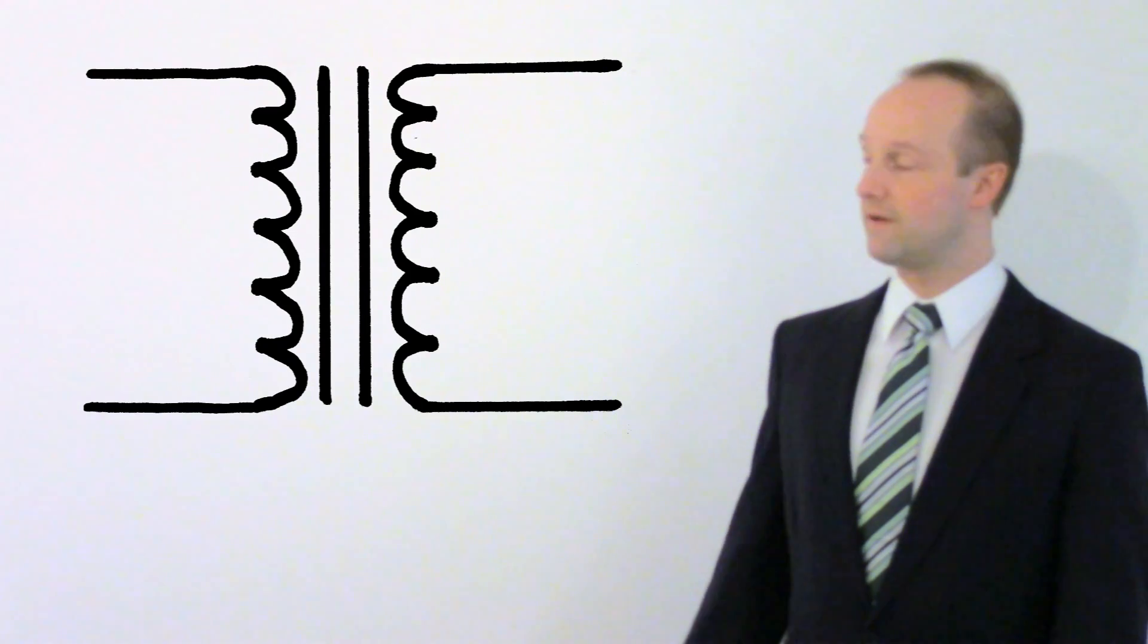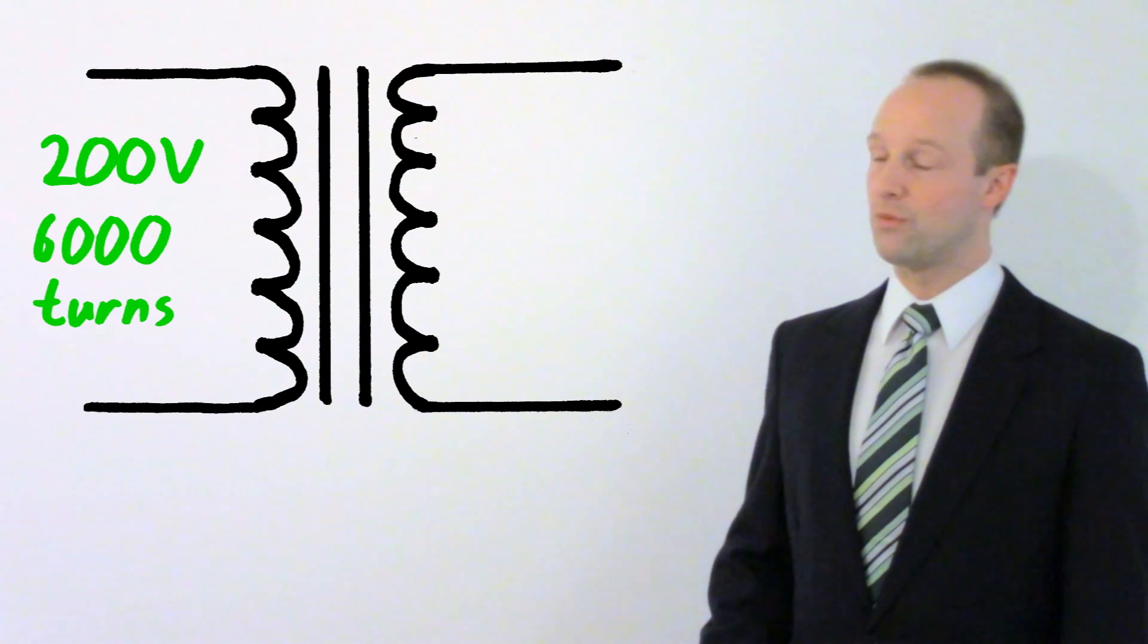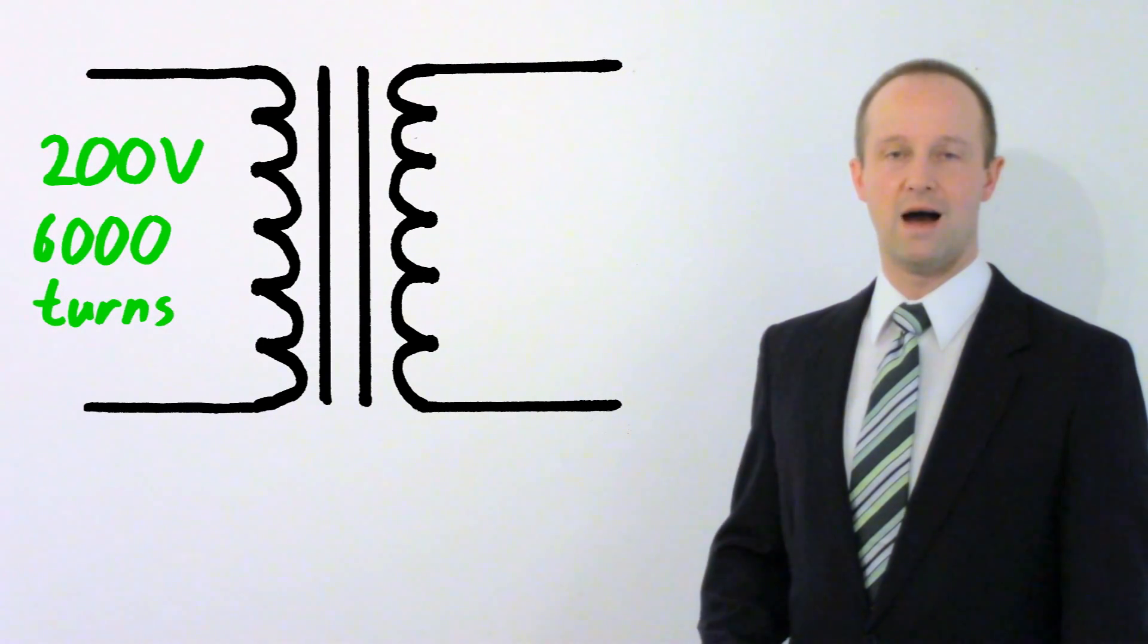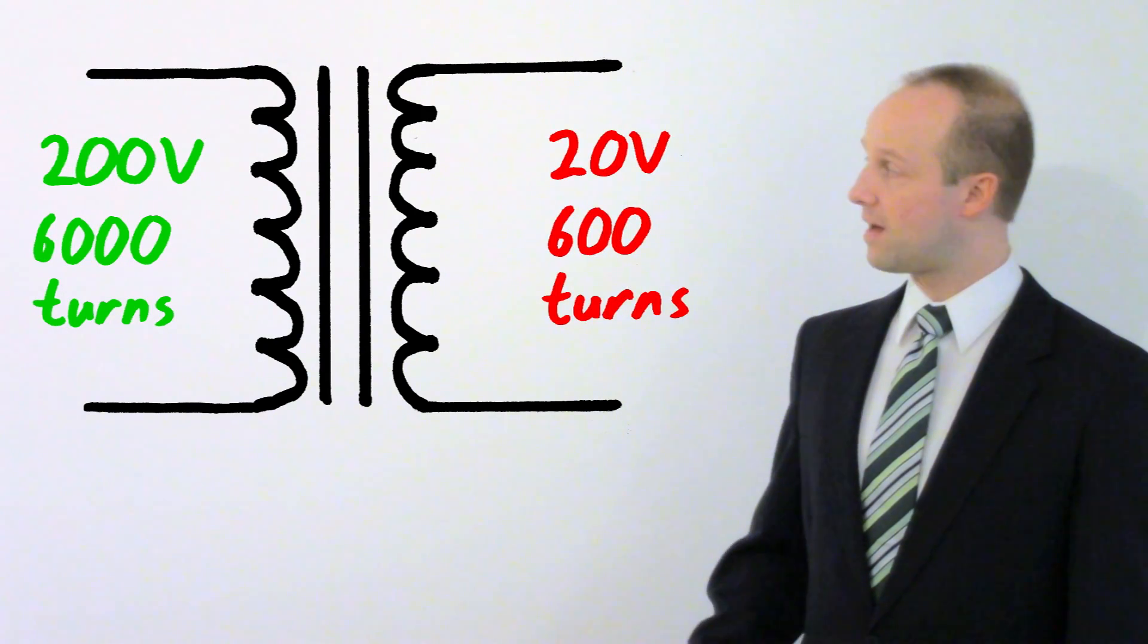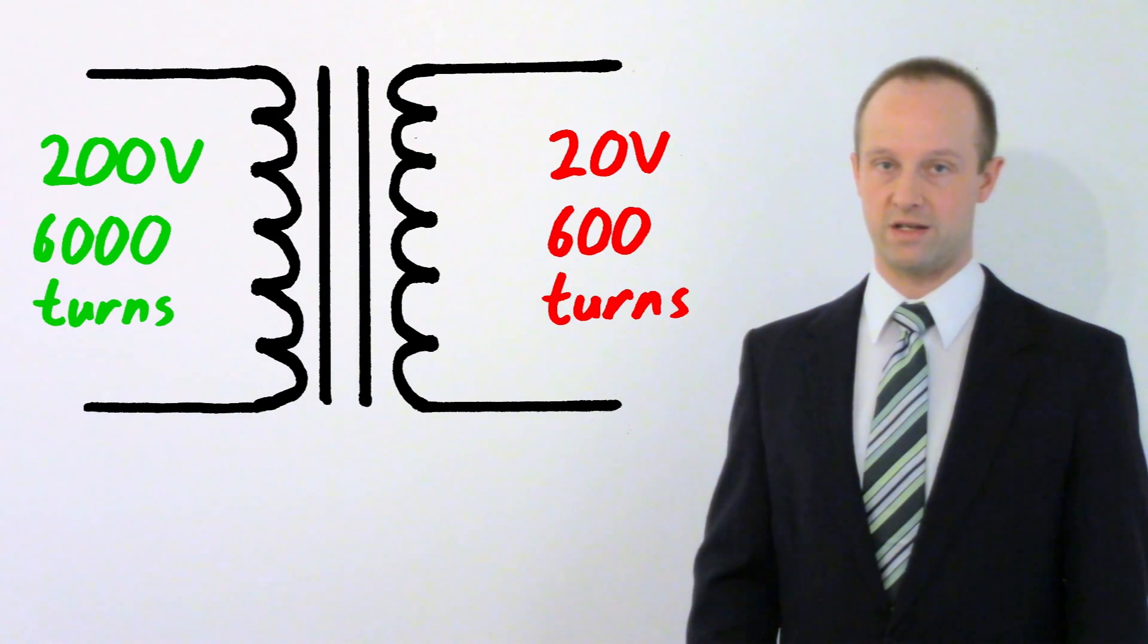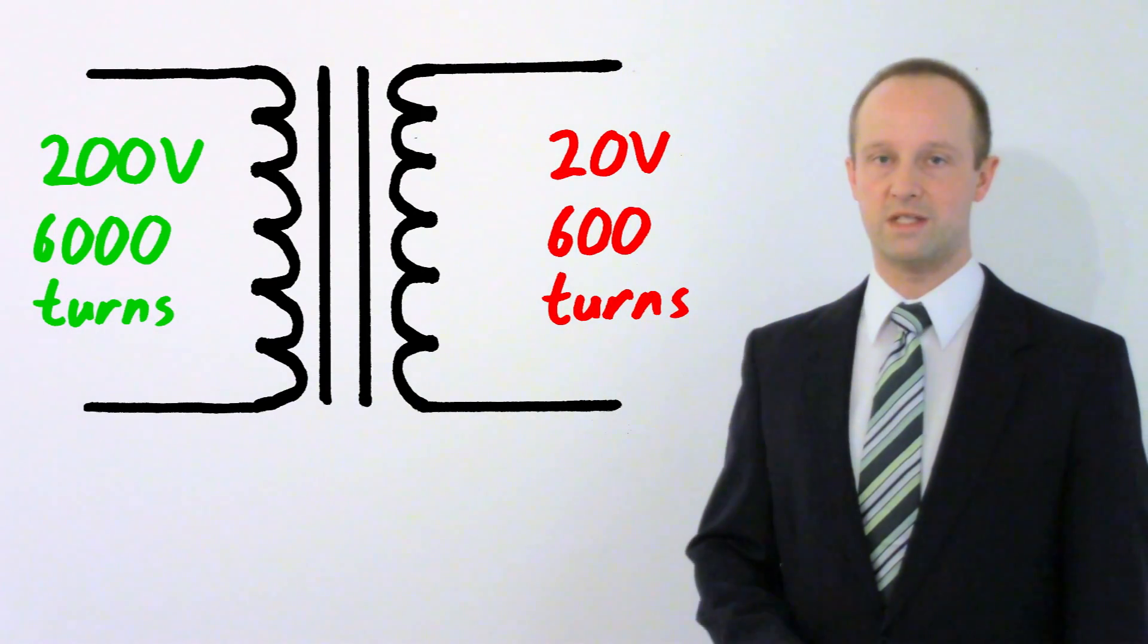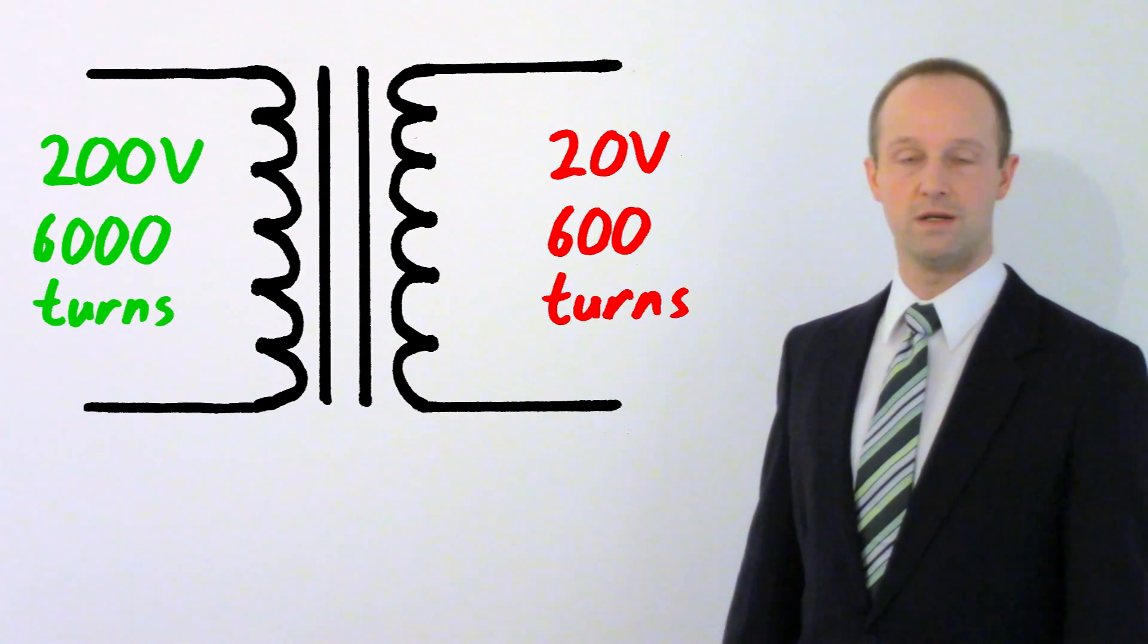So for example if we have a 200 volt input potential difference there and we've got 6000 turns on our primary coil and we have only 600 turns on our secondary coil well then we've got a ratio of 10 to 1. So we're going to step down the potential difference in exactly the same ratio. If there's one tenth as many turns on our secondary coil then we get one tenth the potential difference out. So in this case one tenth of 200 is 20.